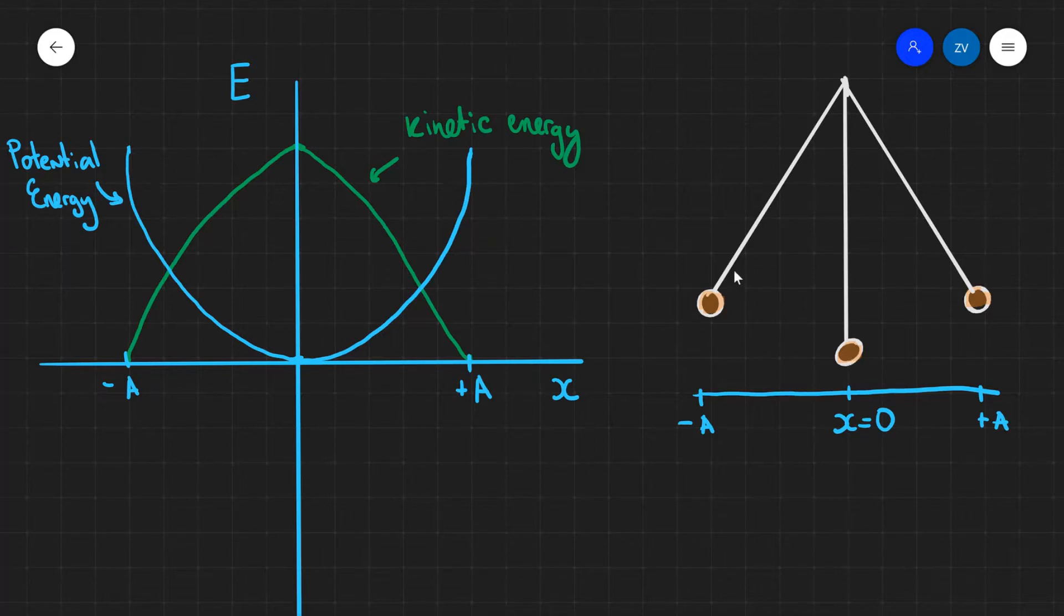Let's have a think of what conversions of energies are occurring during one time period. So if we start at the amplitude during the motion of the pendulum, we know that the speed will be equal to zero. So just right over here, v is going to be equal to zero.